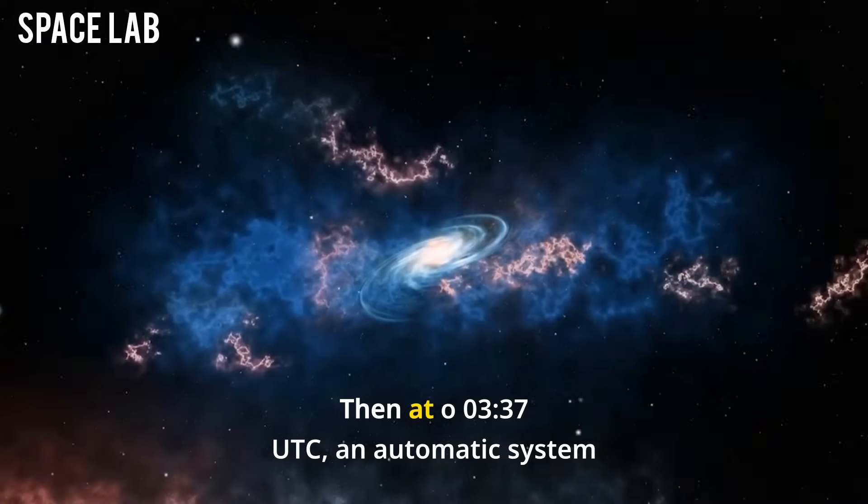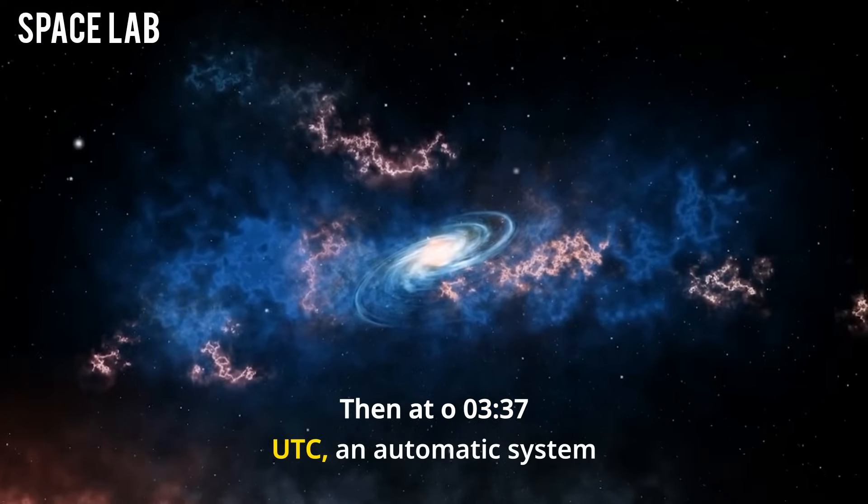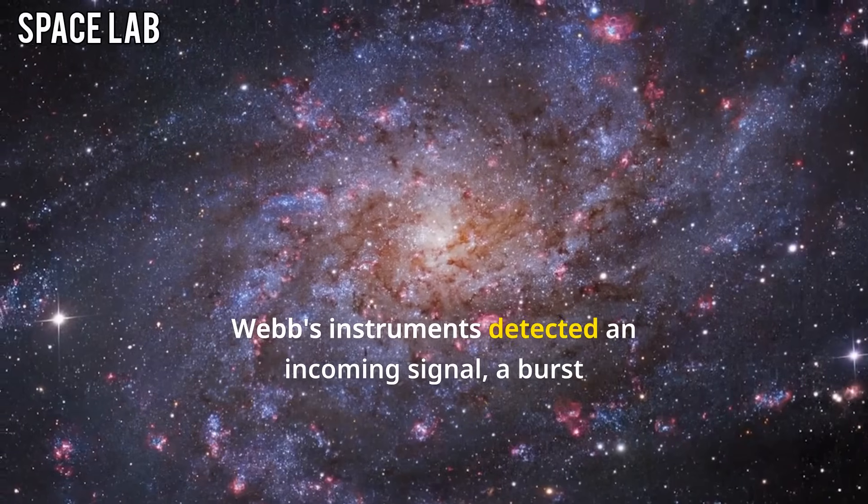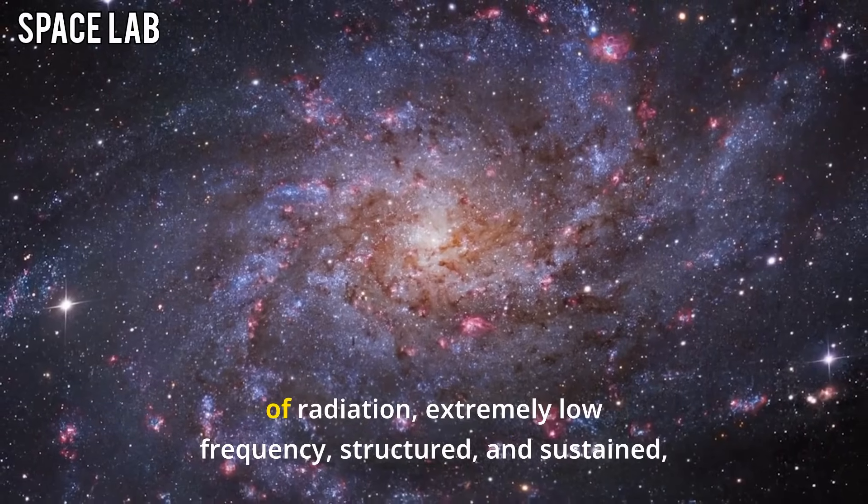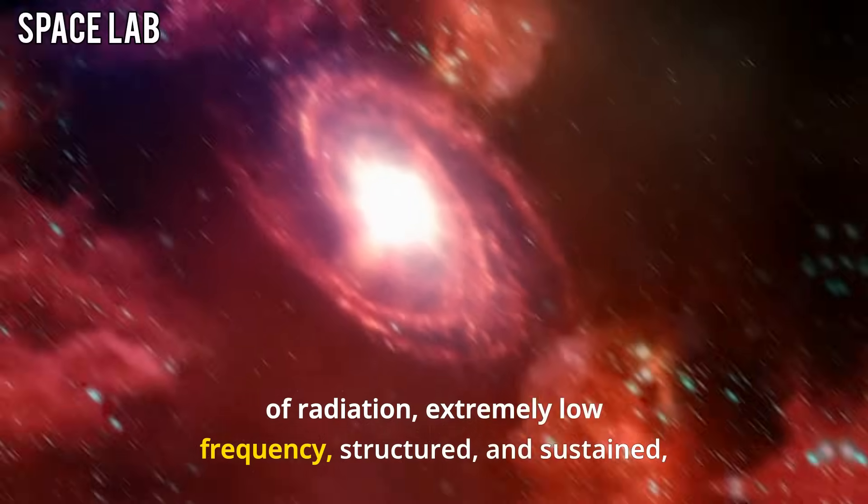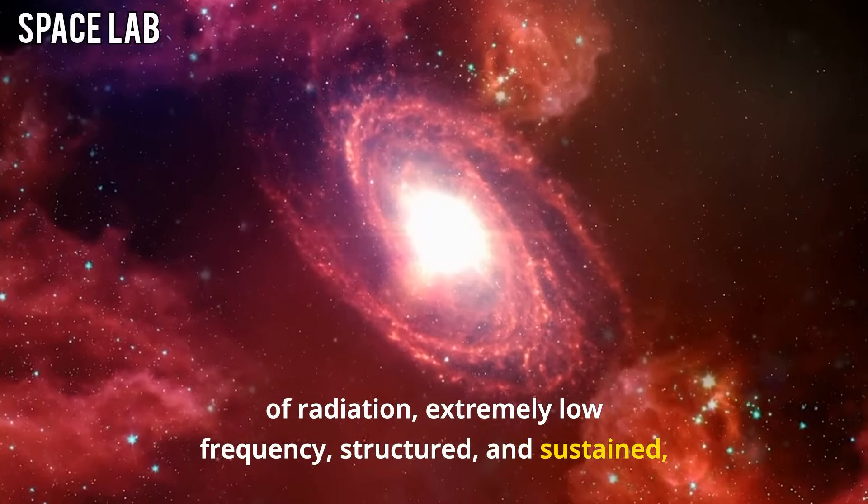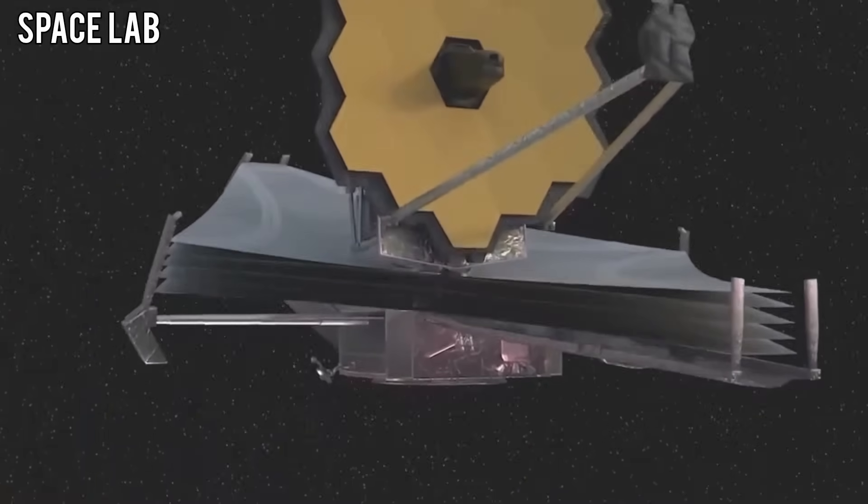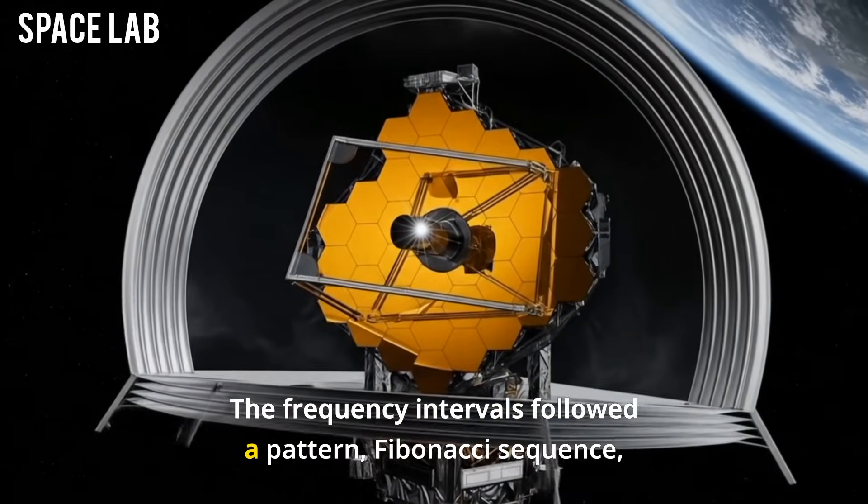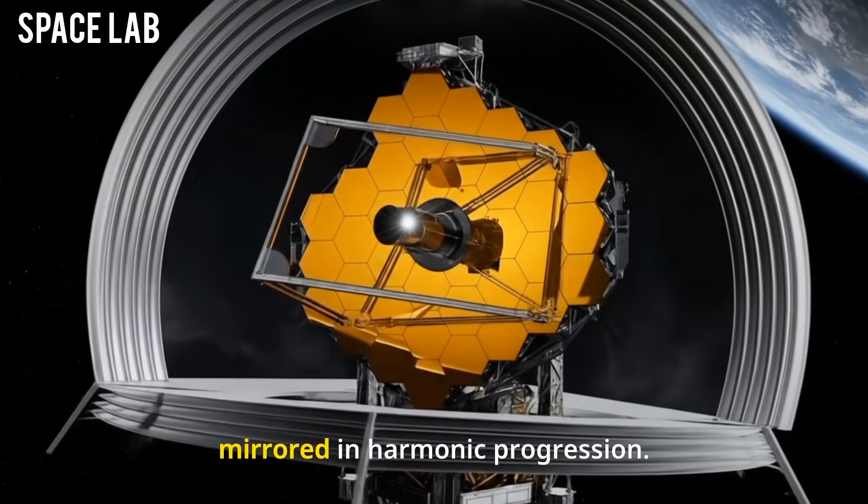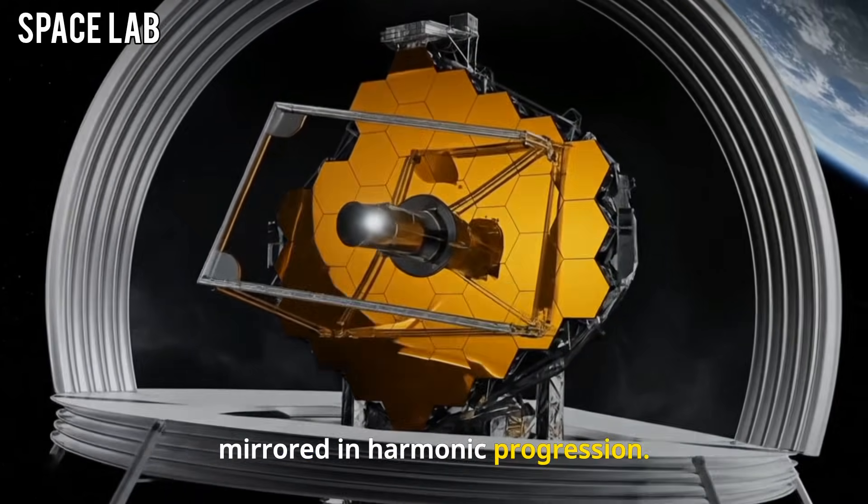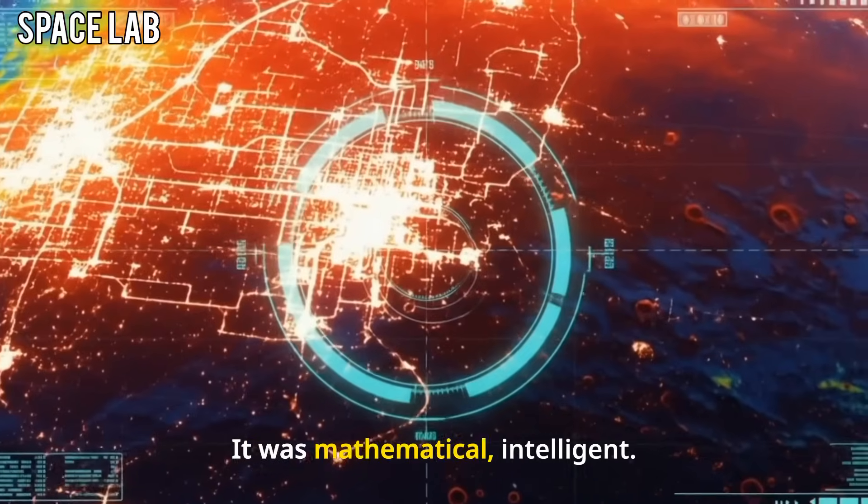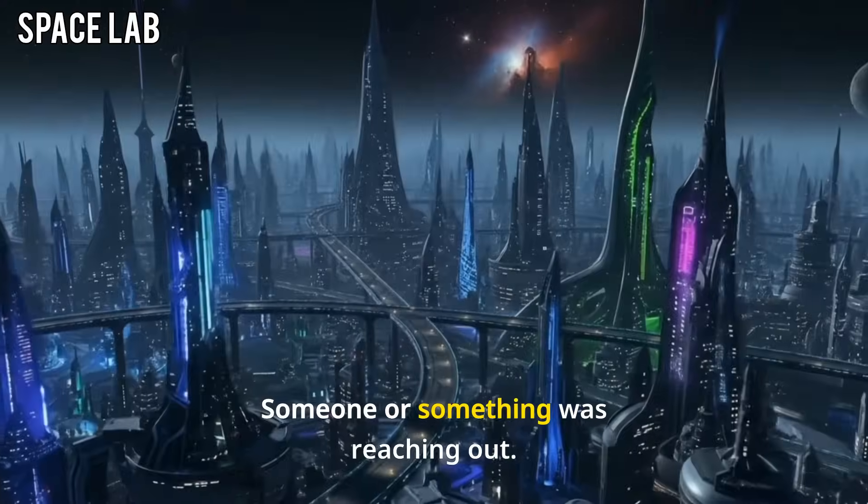Then, at 0337 UTC, an automatic system alert was triggered. Webb's instruments detected an incoming signal, a burst of radiation, extremely low frequency, structured and sustained, originating directly from the anomaly. It wasn't natural. The frequency intervals followed a pattern, Fibonacci sequence, mirrored in harmonic progression. This wasn't just a cosmic echo. It was mathematical, intelligent. Someone, or something, was reaching out.